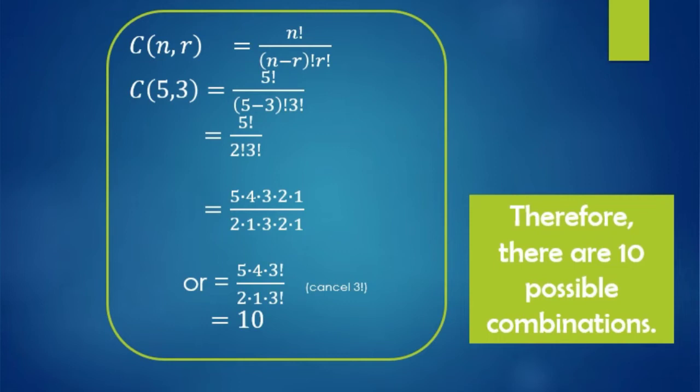Substituting into the formula, we have C(5, 3) equals 5 factorial over the quantity (5 minus 3) factorial times 3 factorial, which equals 5 factorial over 2 factorial times 3 factorial. You can expand all factorials or use cancellation. When you do that, you get 10 as the answer, which means there are 10 possible combinations.